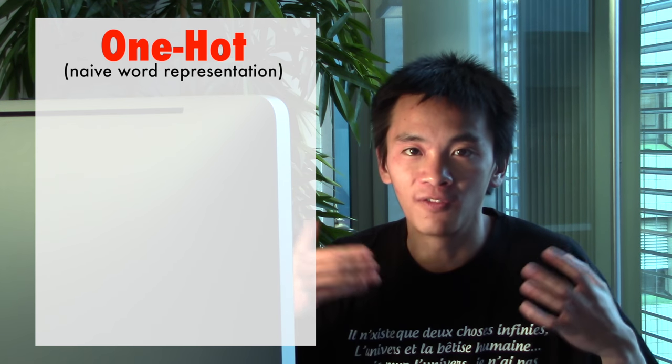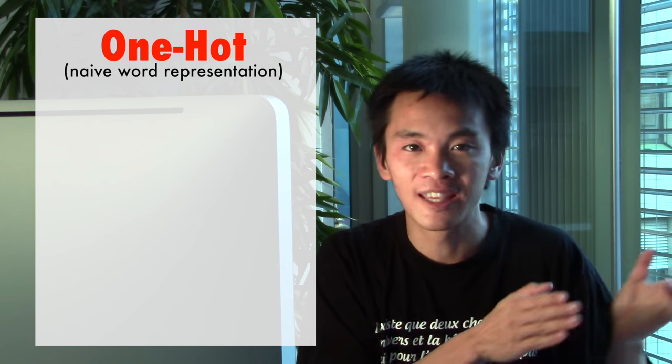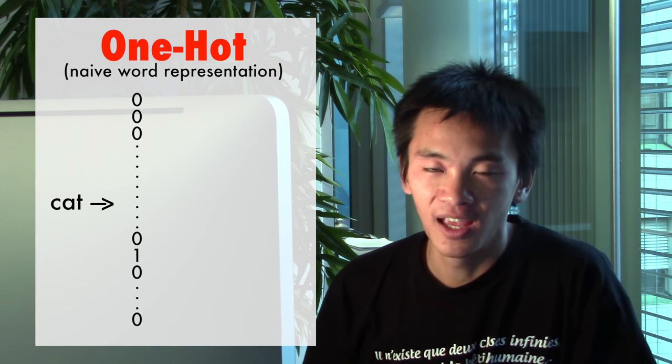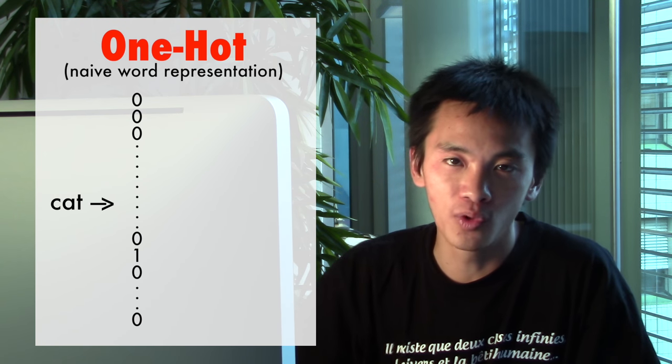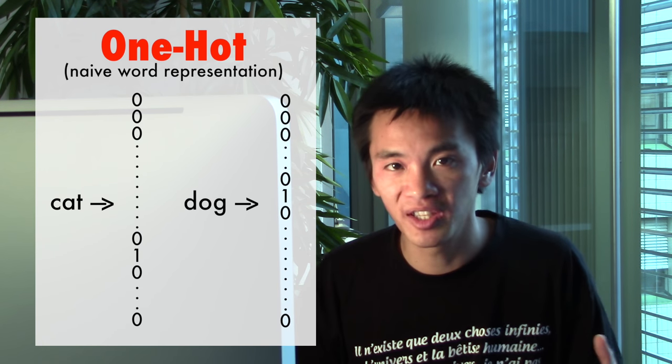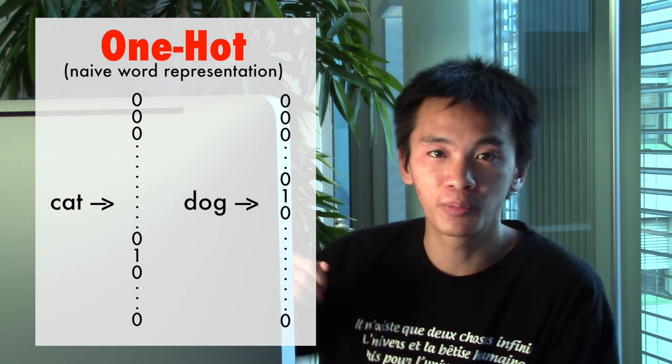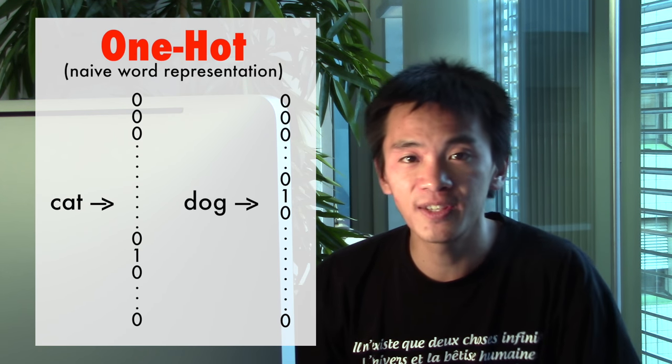The naive way is called one-hot. One-hot representations of words consist in representing a word like cat as a huge column with all zero entries, except for the one entry that corresponds to the word cat. However, using the one-hot representation means that we are going to have to use huge columns of vectors to represent each word in English. This poses at least three problems.